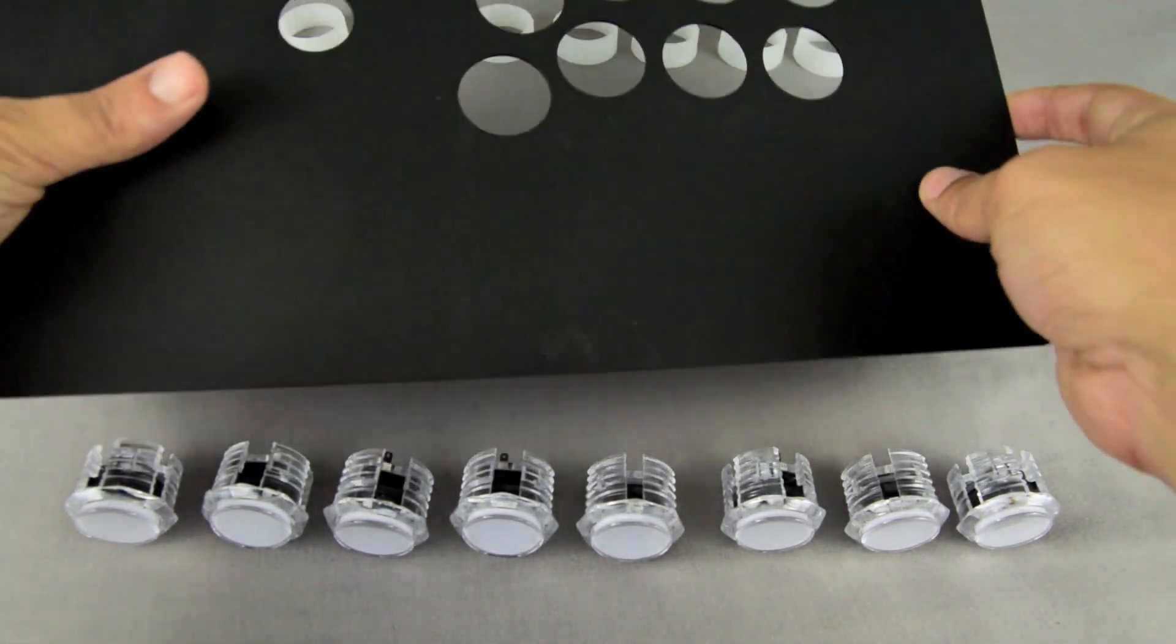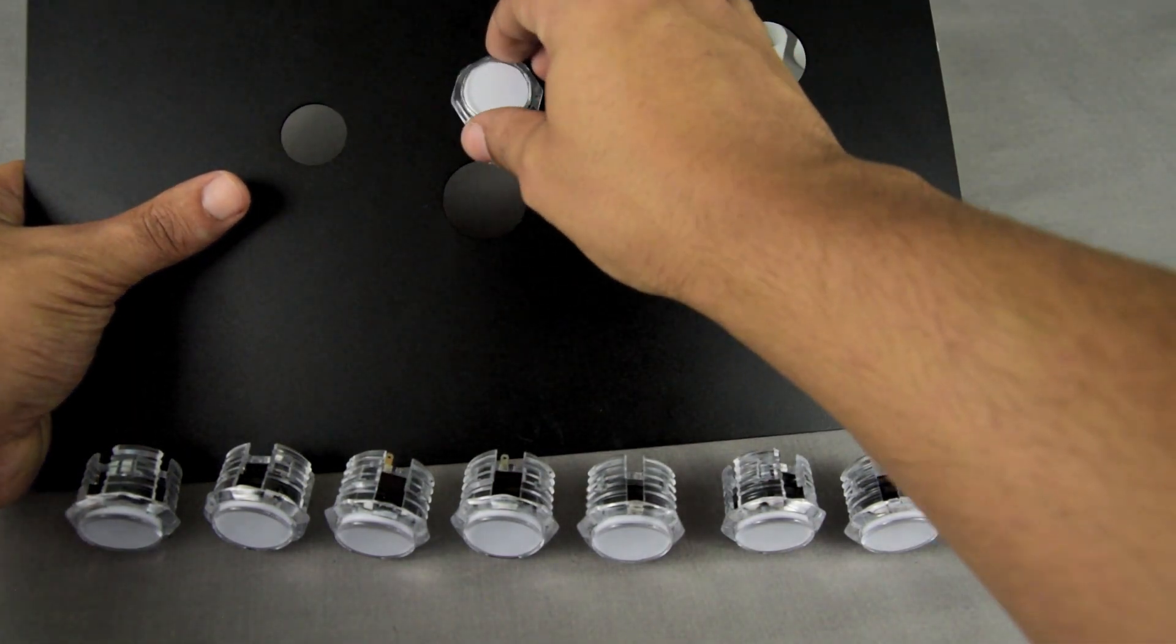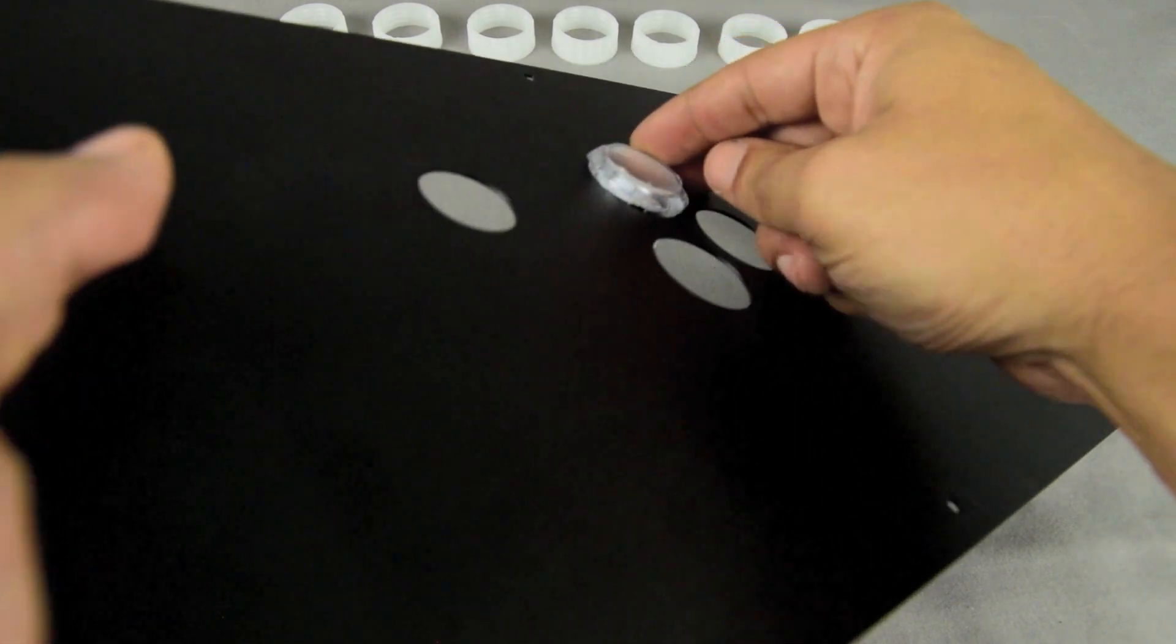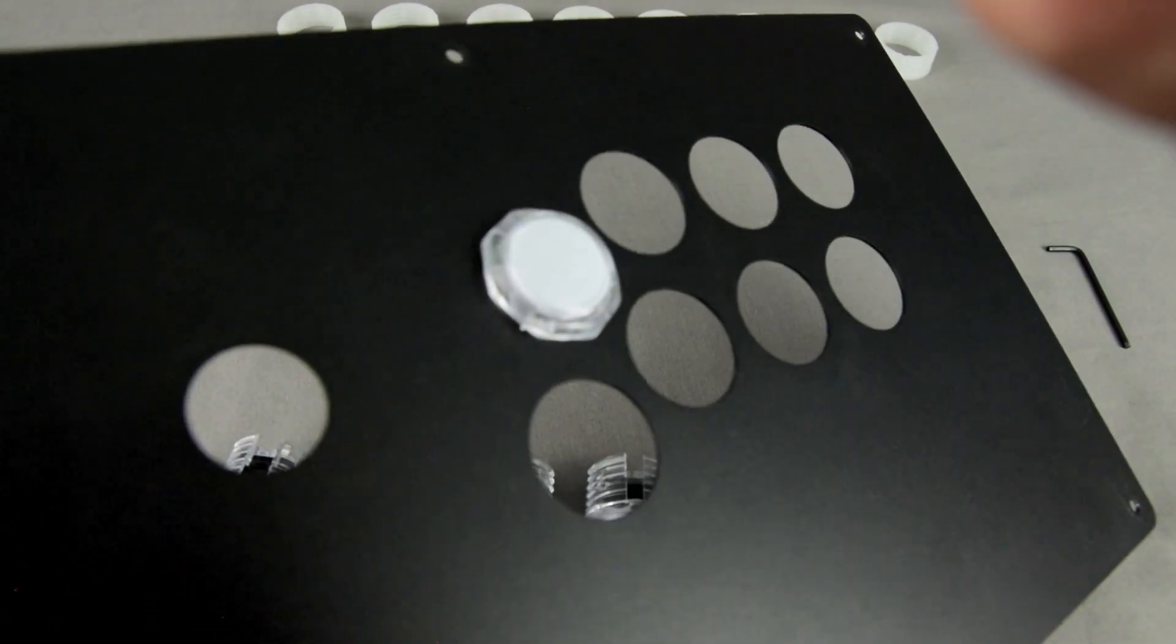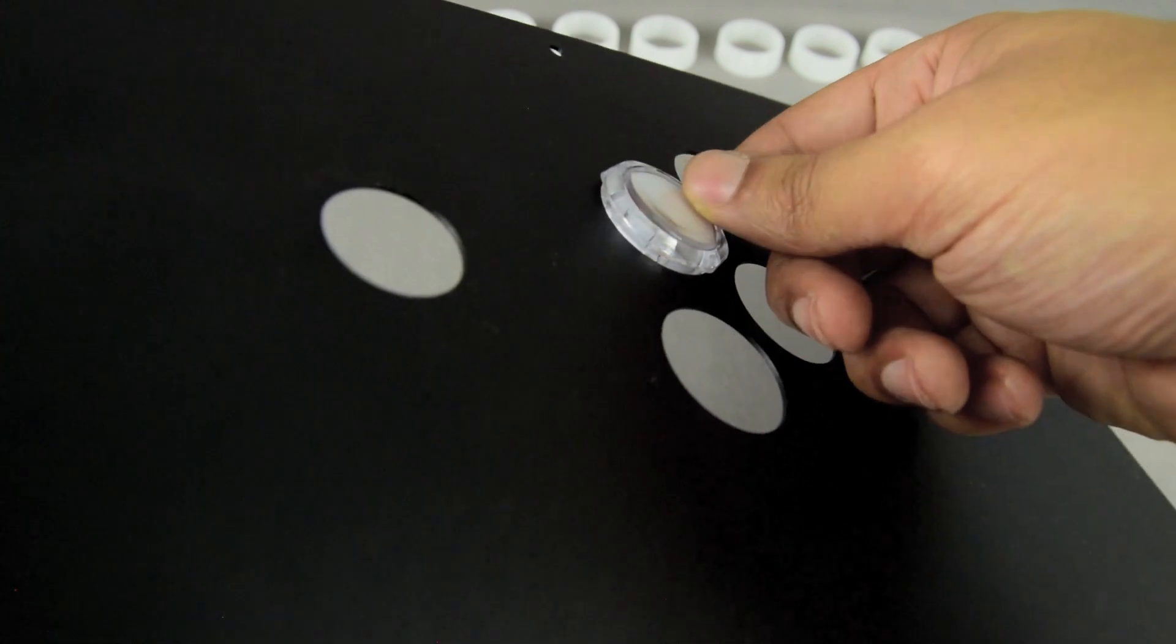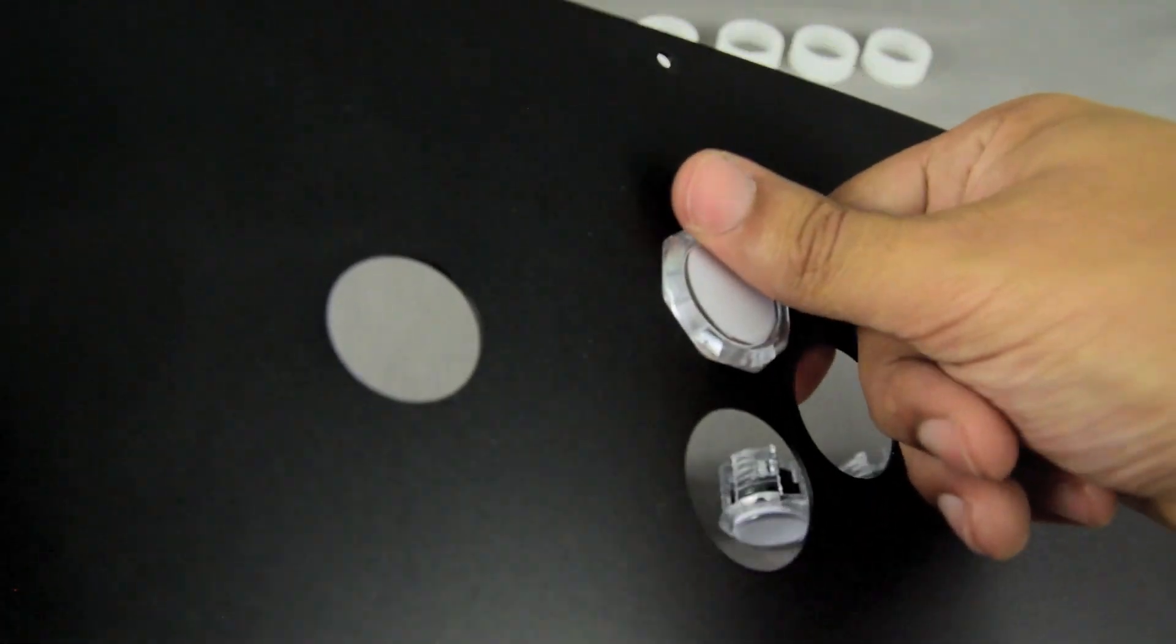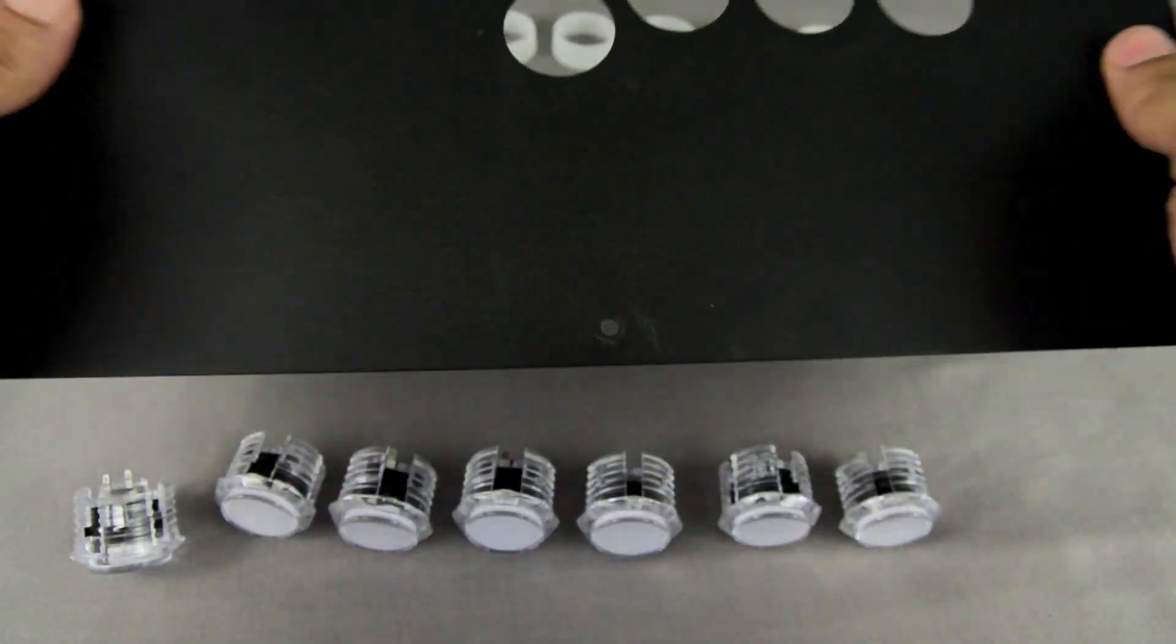With the front plate off, seat the push buttons one by one. The gamer finger push buttons are a bit sturdier than the average push button, so a little bit of force may be needed to seat them completely. The easiest way to tell whether or not they are seated is to visually check for a gap. Just a little extra effort is needed. Let's speed this up here.